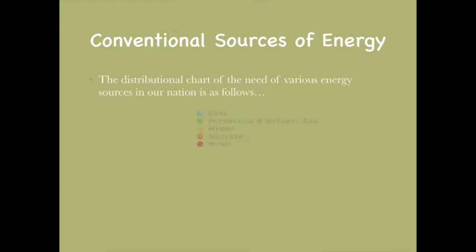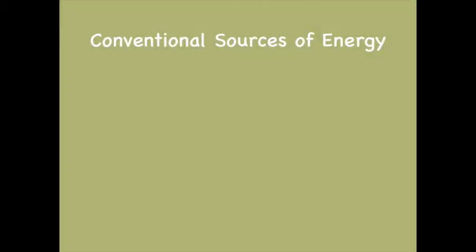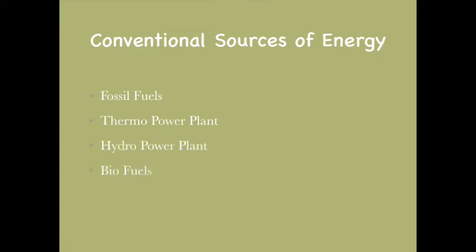A distribution chart of the energy source needs of our nation is shown here for statistical purposes. The major part of our nation uses coal and fossil fuels. Along with fossil fuels, thermal power plants, hydropower plants, and biofuels are all a few conventional sources of energy.